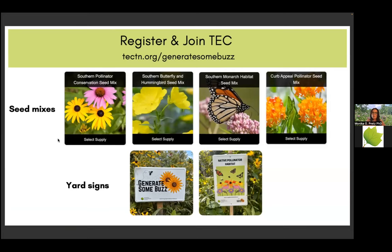If you join our program, we have four different seed mixes that you can order. Each seed mix contains about 20 different species, and each is designed for a 20-square-foot garden — a really good start. We also ask that you support our program and educate your neighbors — order our yard sign. This is a great conversation starter with your neighbors about what you are doing in your garden and why.